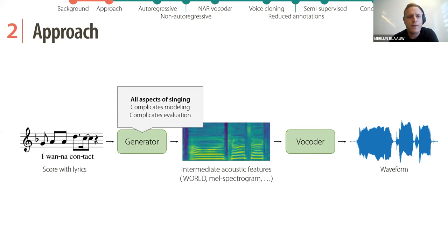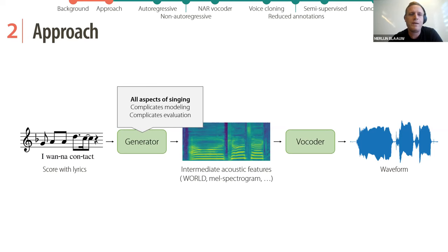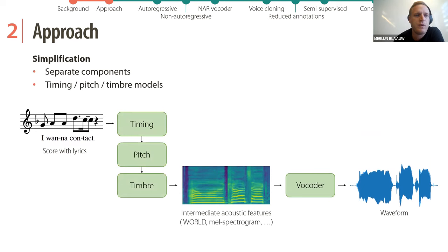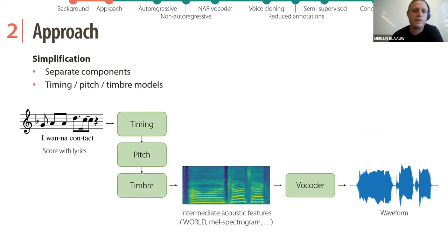There's still an issue that this first model has to model all aspects of singing: timing, pitch, timbre, and other aspects. This complicates evaluation — if all these aspects can change at the same time, comparing two examples becomes very difficult. So another simplification we make is to separate this first model into different components: at least one model responsible for timing, one for pitch, and one for timbre.